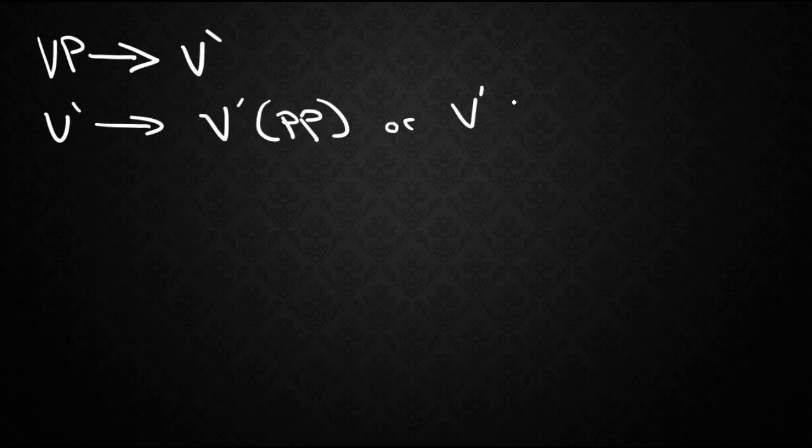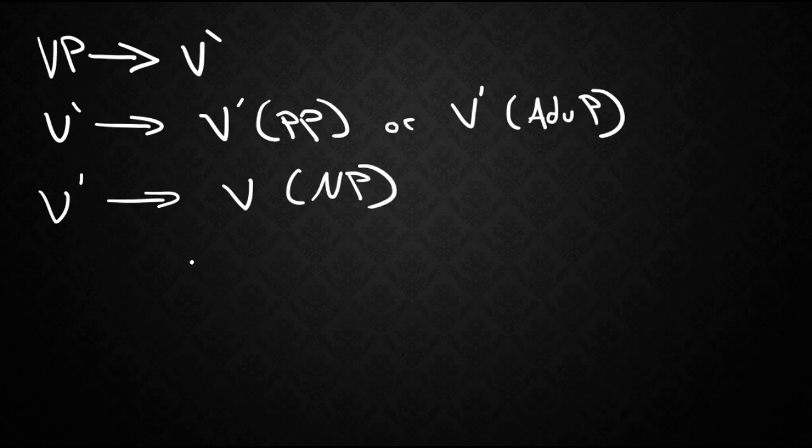So like we did with the noun phrases let's write up the rules for making a verb phrase. The verb phrase or the maximal projection gives rise to a v bar. A v bar gives rise to another v bar with a prepositional phrase that's optional or a v bar with an adverb phrase that is optional. Then we can move down to the head level. The v bar will give us the head v plus an optional noun phrase.